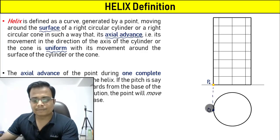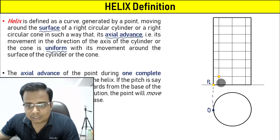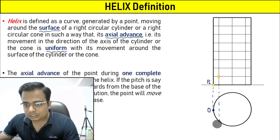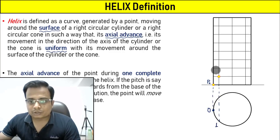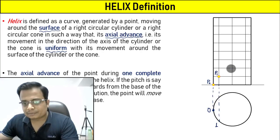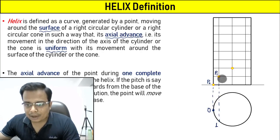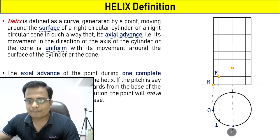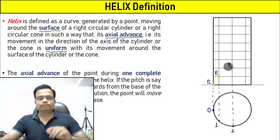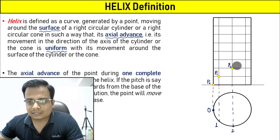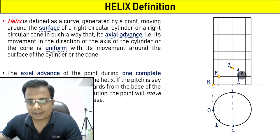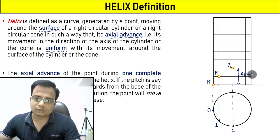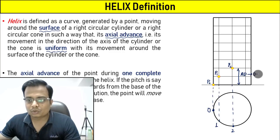The point is going to move in this manner. The point is now here, so its corresponding top view will be somewhere here — that's going to be P1. Then the point will be here, and the corresponding top view of the point will be somewhere here. So this is going to be point two, position two of the point. This is the axial advance I'm talking about — the axial advance from zero to two.